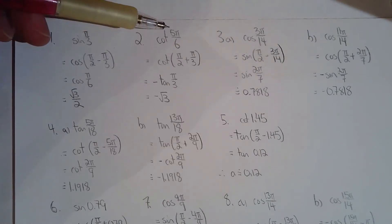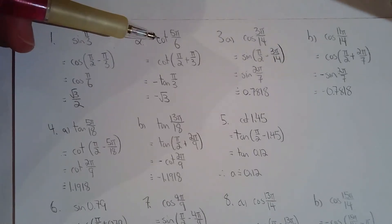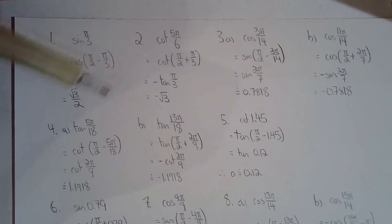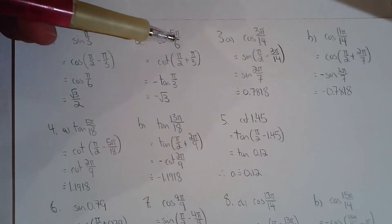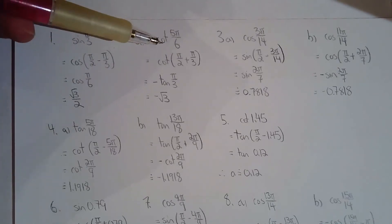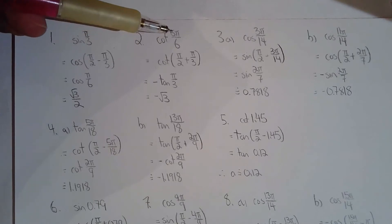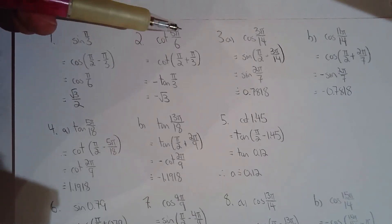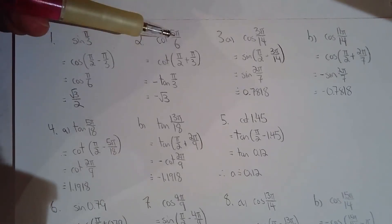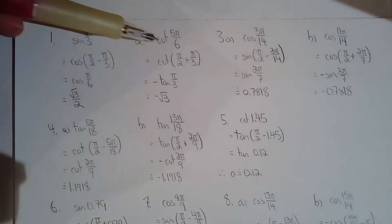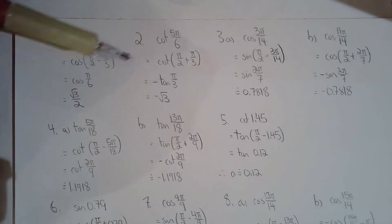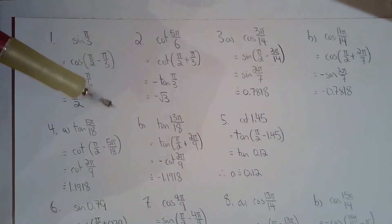For question 2, cotan(5π/6) given that tan(π/3) = √3. There are two ways to approach this. You can take 5π/6, push it to the first quadrant since it's currently in the second quadrant, and then take the complementary angle to go from cotan to tan.